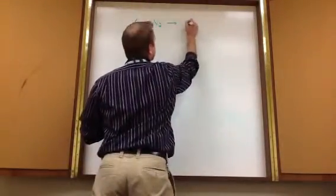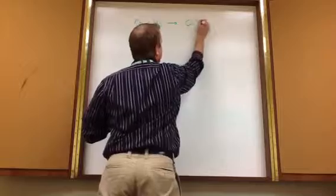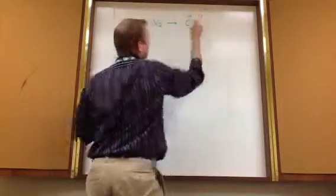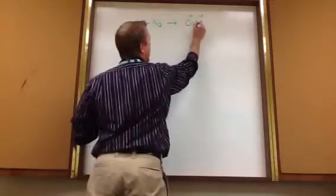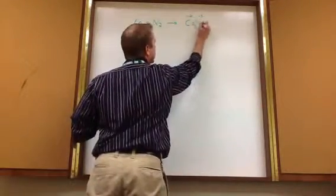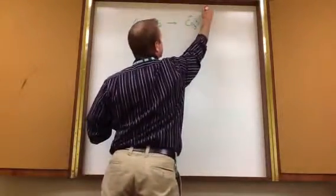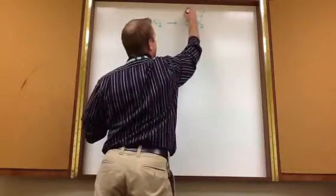When we put these together we get Ca and N. Now, calcium charge is plus 2, nitrogen is minus 3, therefore it's Ca3N2 because your charges have to cancel.